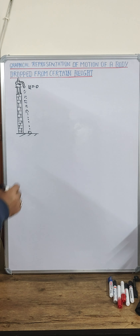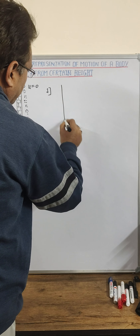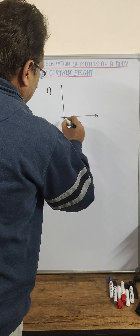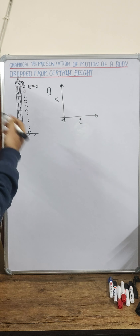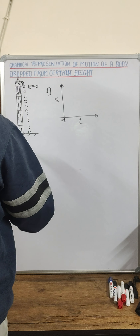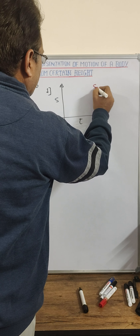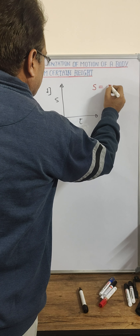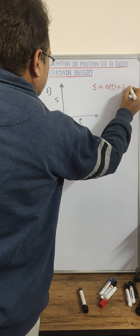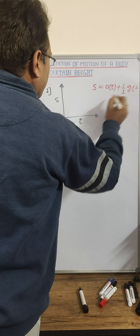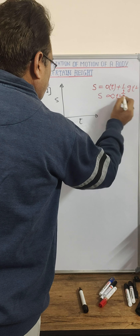First of all, we will discuss the displacement-time graph. Because initial velocity is 0, we know that displacement of a body is written as s = ut + ½gt², which gives 0·t + ½gt². It means displacement is proportional to t².